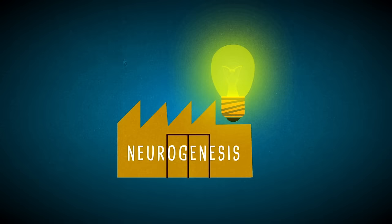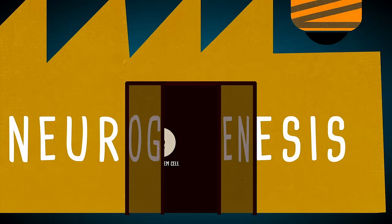This process, known as neurogenesis, involves dedicated brain cells called neural stem cells and progenitor cells, which manufacture new neurons or replace the old ones.